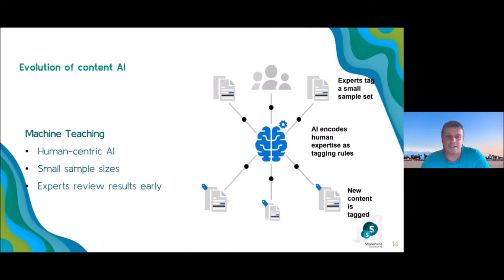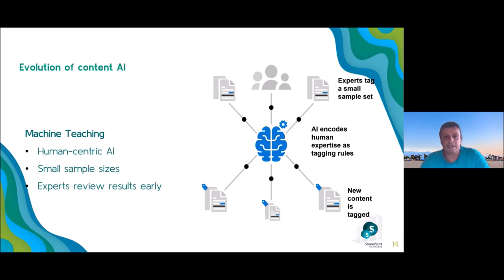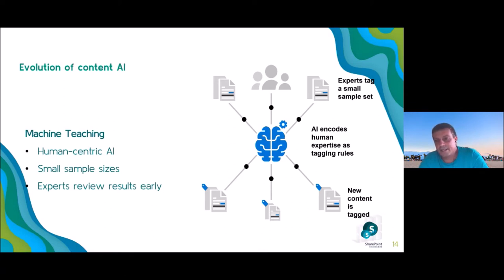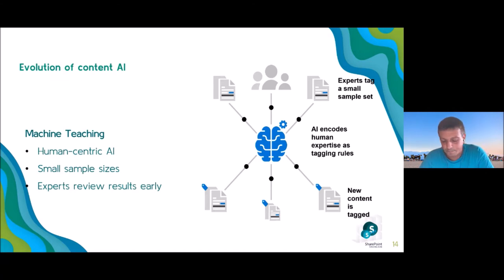Machine teaching is different. First, in machine teaching the number of elements required for analysis is lower. But more importantly, the AI algorithm is now human-centric in the sense that the user can intervene in the algorithm and provide increasingly reliable results. It is possible to make changes at this level to obtain more consistent results.